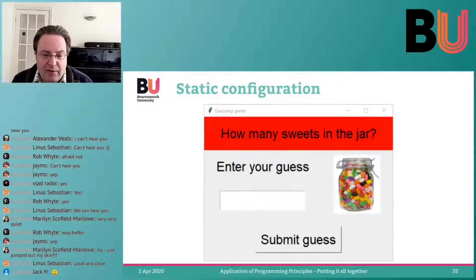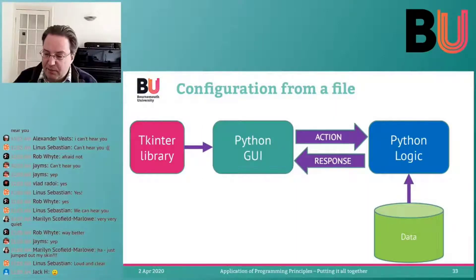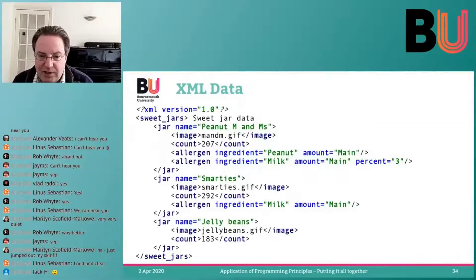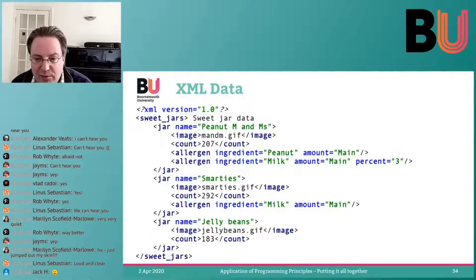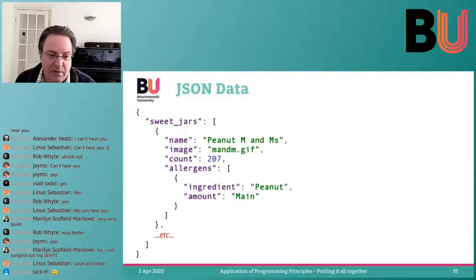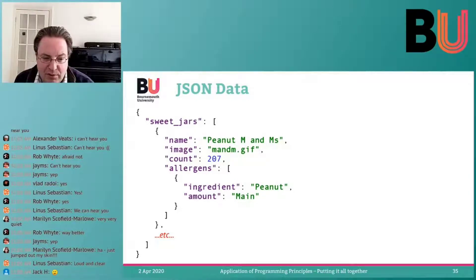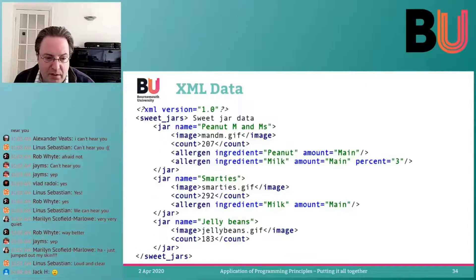You might have static configuration, but sometimes you want to configure it dynamically. For example, you can have data like this — different kinds of things in our jars. An M&M jar has a certain image and certain properties. You can do that in JSON as well. JSON is structured a little differently and works a little differently than XML.